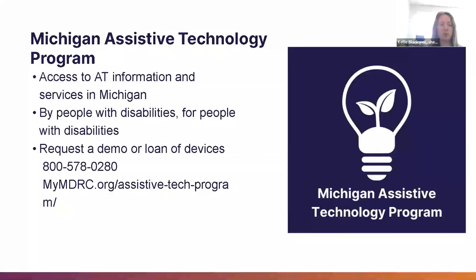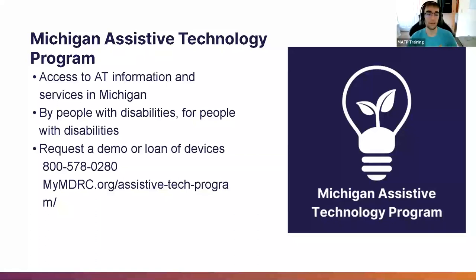To sum up, we provide demonstrations, short-term and open-ended loans of devices. We can do trainings for different businesses and organizations. If you just have a quick question, you can give us a call or send an email. We provide technical assistance — pretty much all things AT we have a passion for. The image on this slide is our logo: a white lightbulb with a seedling growing inside of it, with text reading Michigan Assistive Technology Program over a navy blue background.